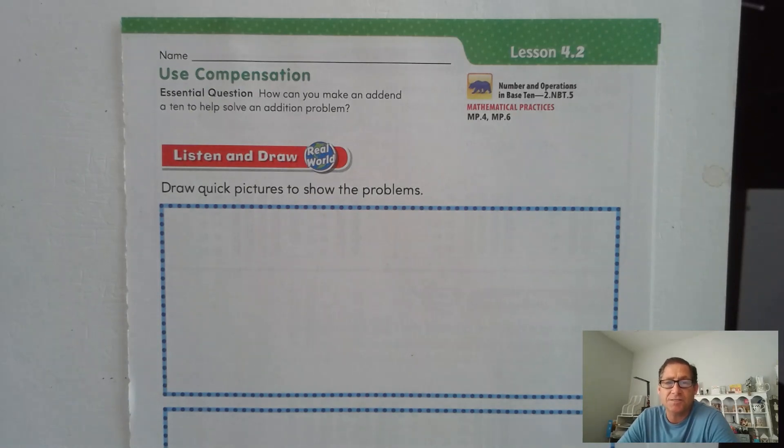The essential question that you need to be able to explain at the end of this lesson is, how can you make an addend, a number that we add, a 10 to help solve an addition problem? It's very similar to the idea that we used in the last lesson, because when we add, if we have one of our addends is a 10, it can make adding easier.